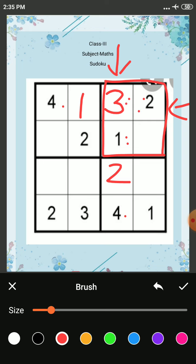Now take this row. 1, 4, 2. Which number is missing? 3. So we will write 3 here. Now take this column. 2, 4, 1. Which number is missing? 3.